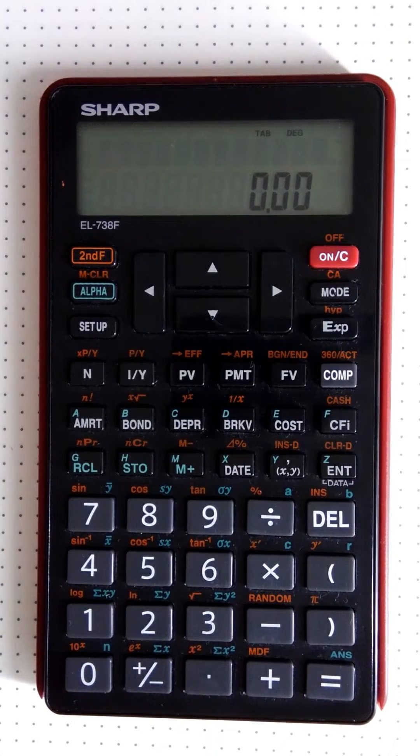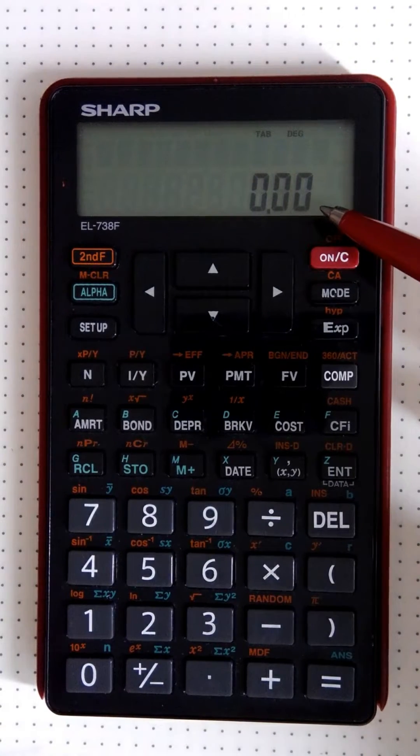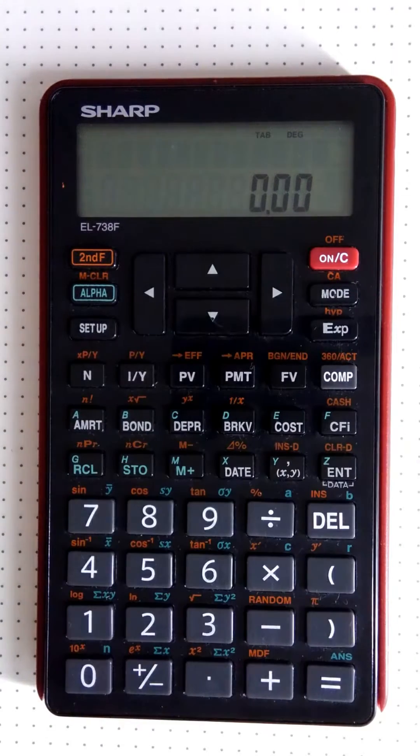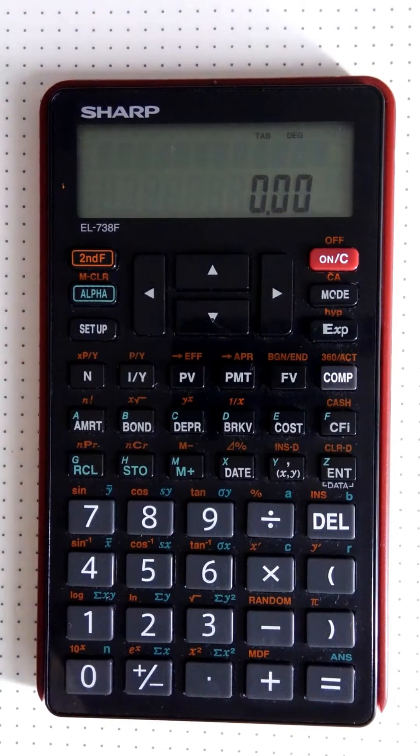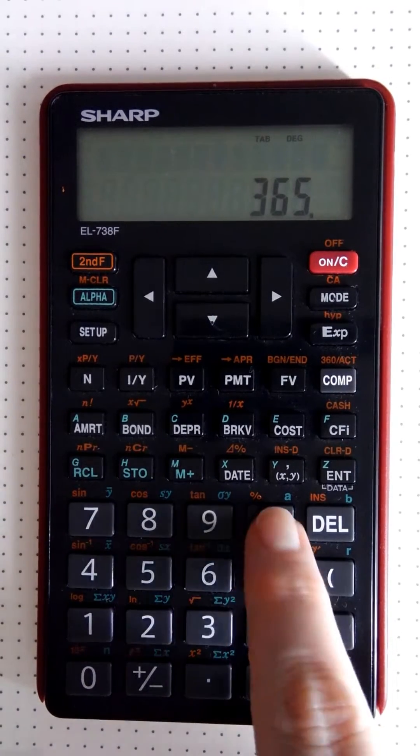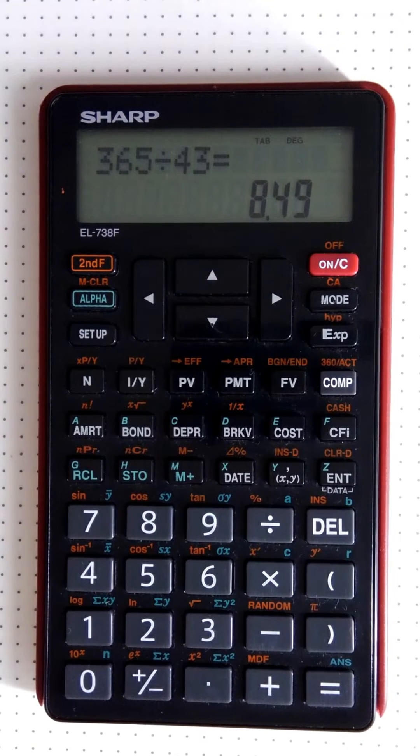When we start up our financial calculator, we notice that the display shows two decimal places by default. If you push the reset button, it's going to take you back to two decimal places. For example, if we take 365 divided by 43, we get 8.49.